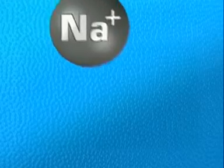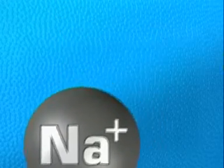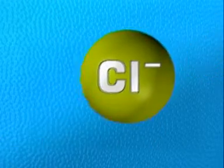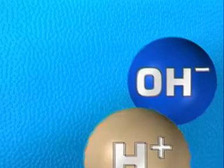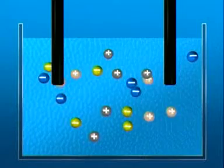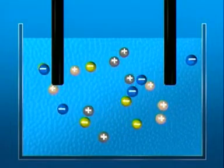Imagine you can see the charged particles in solution. There are sodium ions, which are positive, and chloride ions, which are negative. The others present in water are positive hydrogen ions and negative hydroxide ions. These different charged particles are all free to move.